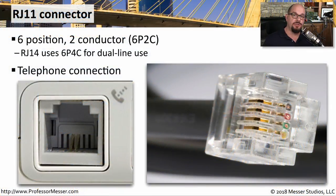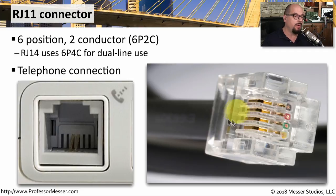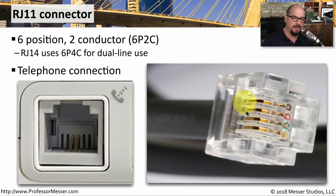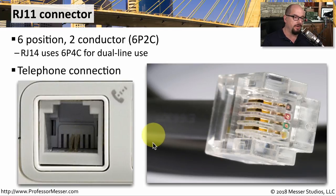If you're connecting up a traditional phone line or using a modem connection over a traditional phone line, then you're probably using an RJ11 connector. This is what we call a six-position two-conductor cable, or a 6P2C connector. You can see there are six different positions that could be on these cables, but if you look into a modem, you'll see that only two conductors are in use.